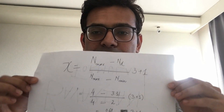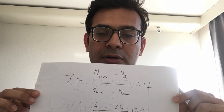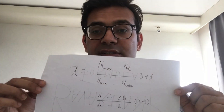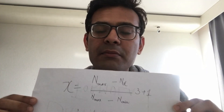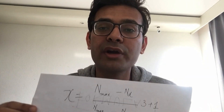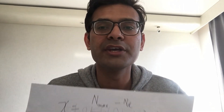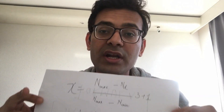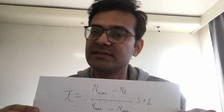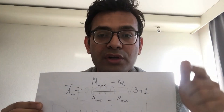The formula is: (n_max minus nd) divided by (n_max minus n_min), multiplied by 3, plus 1. Here, n_max is the maximum grade awarded by your university — usually 4 or 5. nd is the grade obtained by you in your last degree. n_min is the minimum grade awarded by your university in that particular degree.